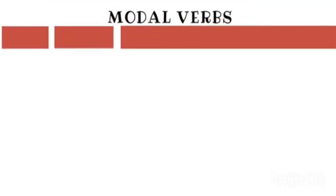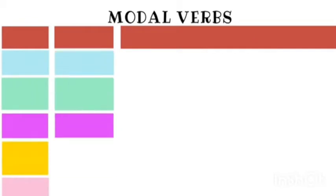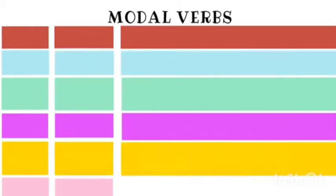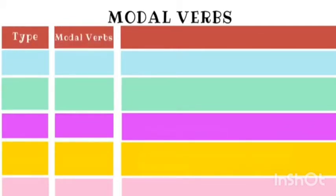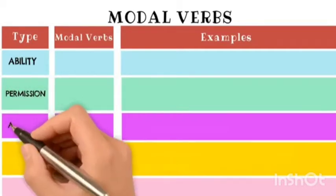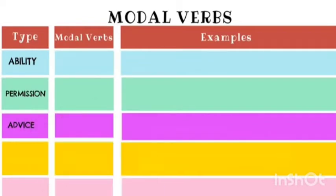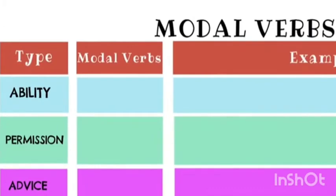Let us see the usages of the modal auxiliaries. Here is the tabular representation of the modal auxiliaries along with their type and examples. So, let us start with the type and name of the modal verbs and the example. To express ability, to express permission, to express advice, to tell some obligation or duty, to show some possibility, we use modal verbs.